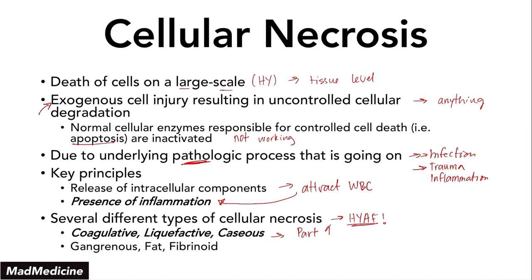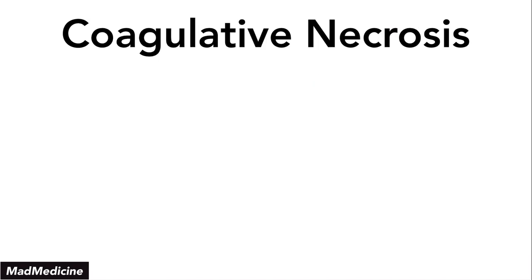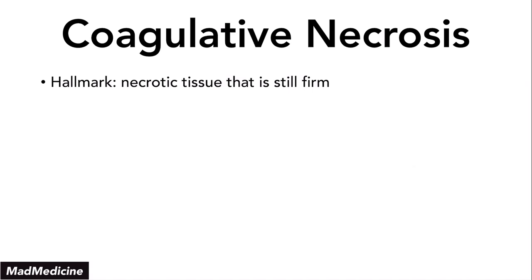Let's dive into the different types of necrosis, starting with coagulative necrosis. This is probably one of the harder ones for people to understand — it takes a second to sit in your brain. Coagulative necrosis is essentially a type of necrotic tissue that is going to be hard. The hallmark is firm necrotic tissue. Usually this is going to occur in solid organs.